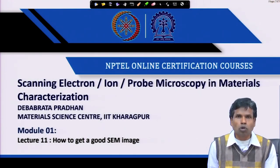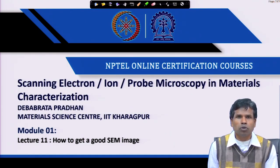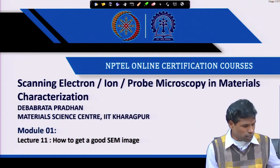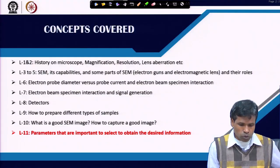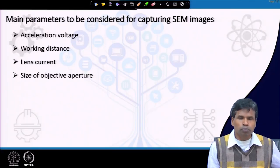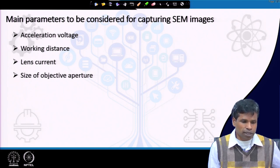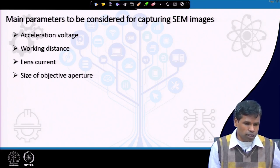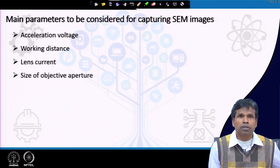Welcome back to our course on scanning electron ion probe microscopy. In our last lecture we discussed how to get a good SEM image and what parameters to be chosen to get the desired information from our sample. We discussed four major parameters that an operator can control: acceleration voltage, working distance, lens current, and size of the objective aperture.